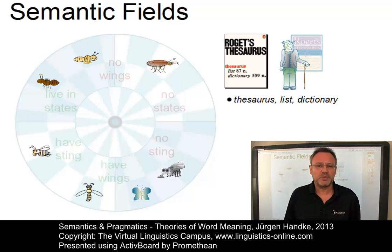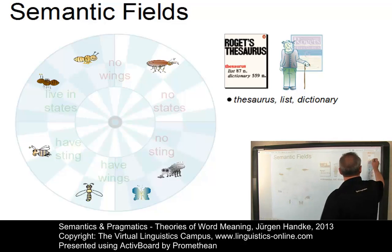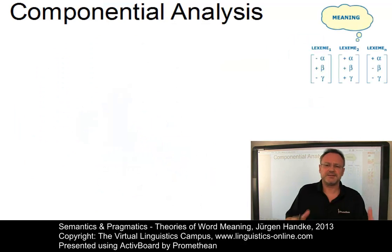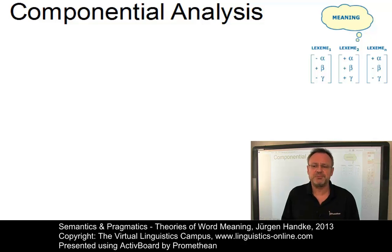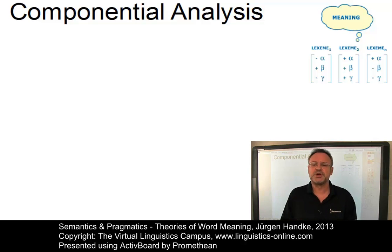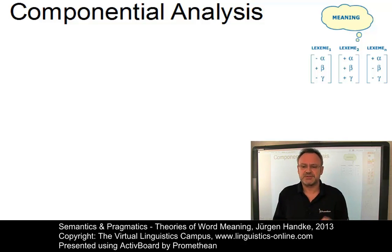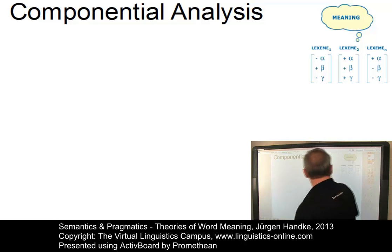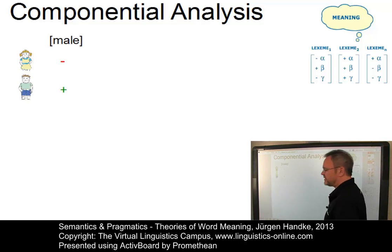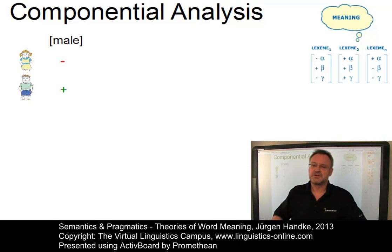Let us now turn to a more formal way of representing word meaning: the componential analysis approach. Like the distinctive feature approach in phonology, componential analysis attempts to define word meanings as complexes composed from a finite set of components called semantic primitives. Let us illustrate this using two concepts, girl and boy. To distinguish them, we need one feature.